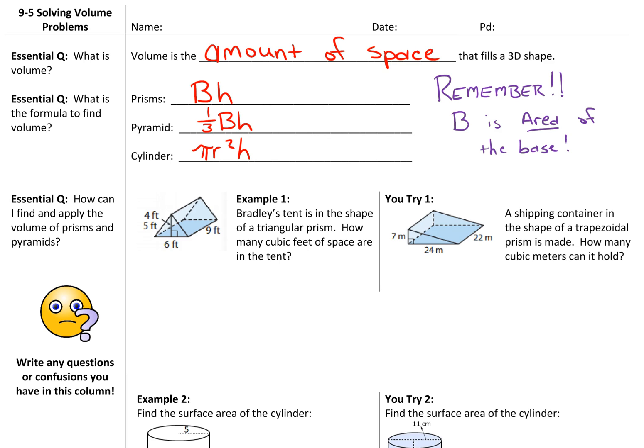You might want to pause here to fill in some of the definitions. Volume is the amount of space that fills a 3D shape. To find the volume of a prism, we're going to look at BH, capital BH. That's area of the base times height. Pyramid is one-third of that. So one-third times BH, or one-third times area of the base times height. That's a new formula for you.